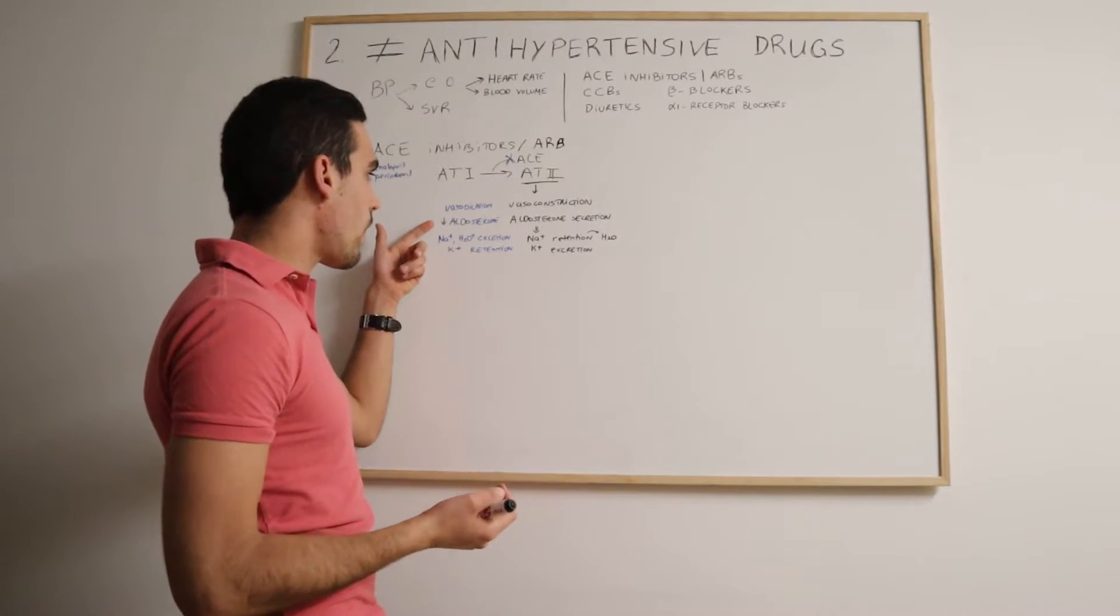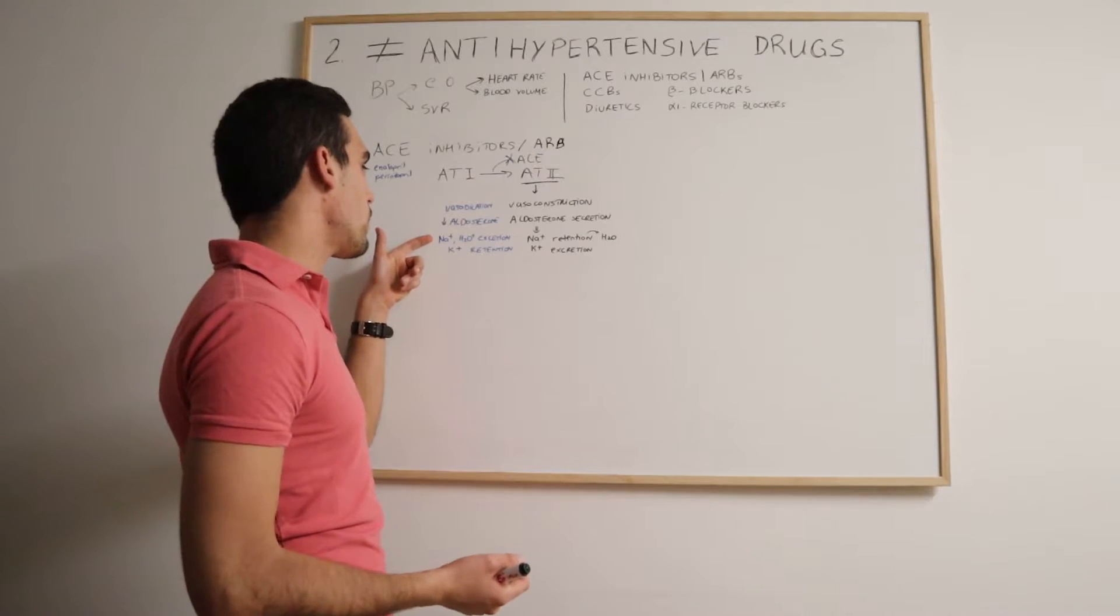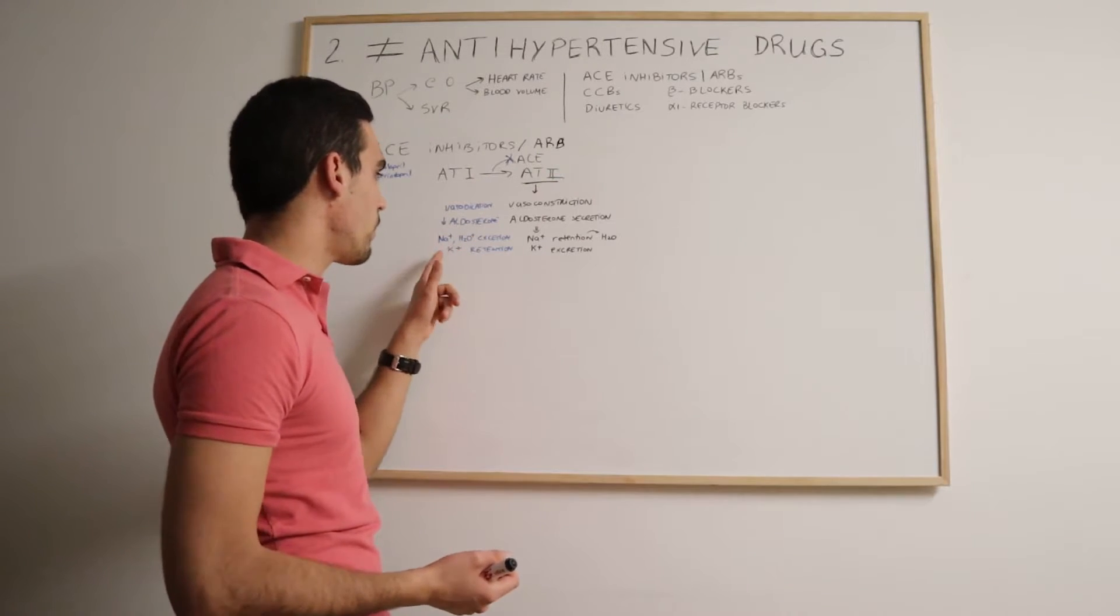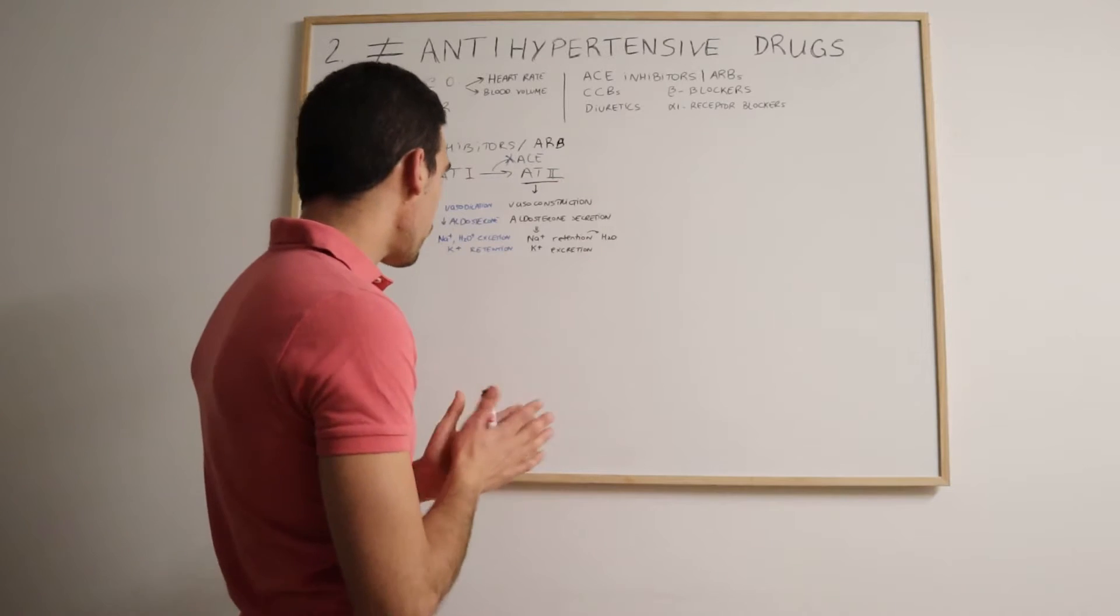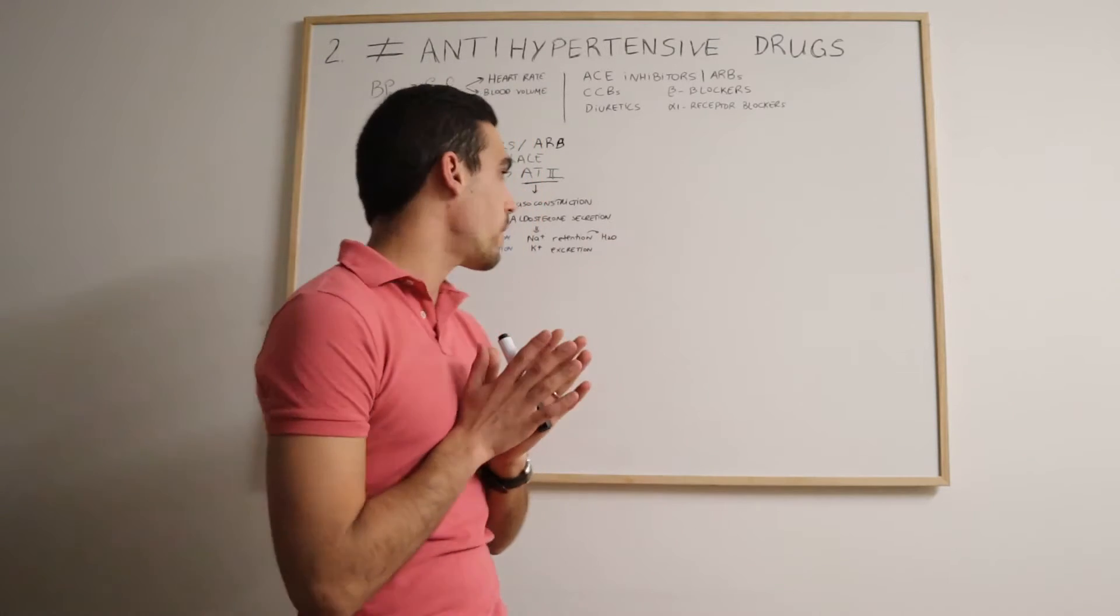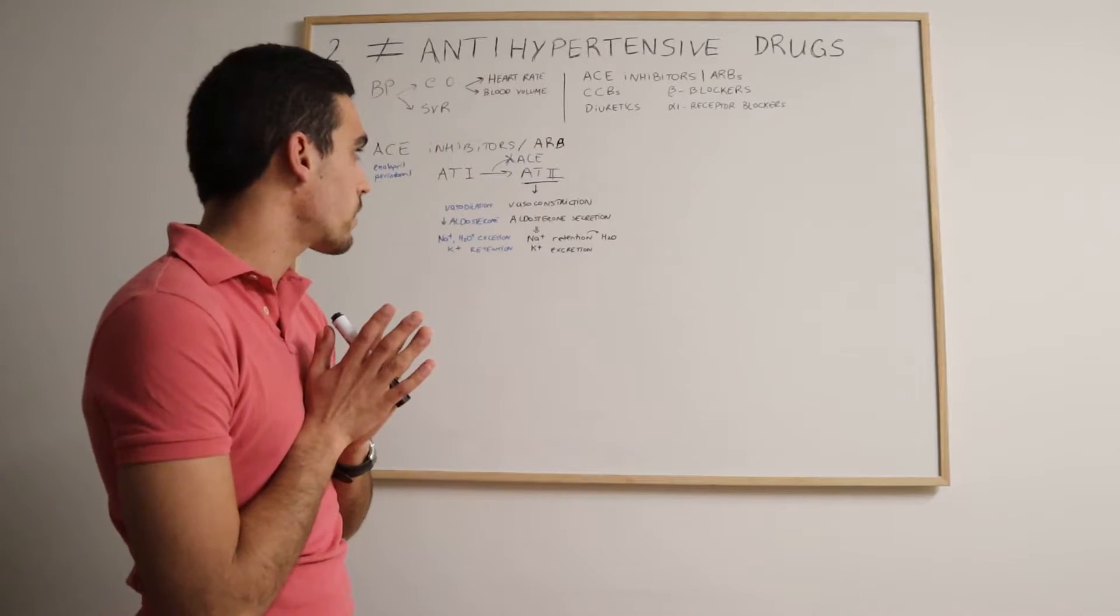Basically the outcome is pretty much the same as the ACE inhibitors. Vasodilation, reduced aldosterone, so we'll have more sodium and water excretion and more retention of potassium. These are the main effects of these drugs.